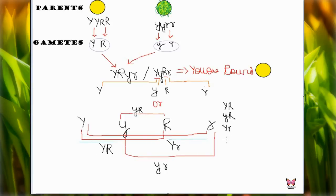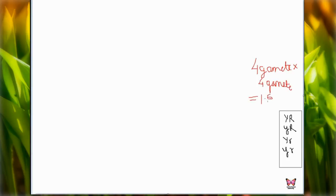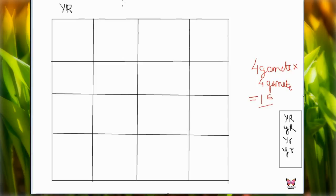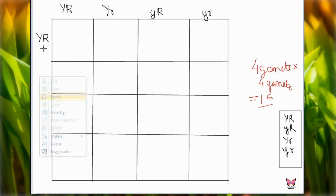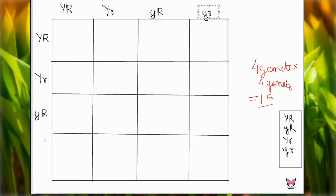I am going to write down all four gamete combinations. If we have four types of gametes and cross them with four more gametes, we will get a total of 16 types of progeny in the F2 generation. So I am going to construct the Punnett square table for the dihybrid cross.